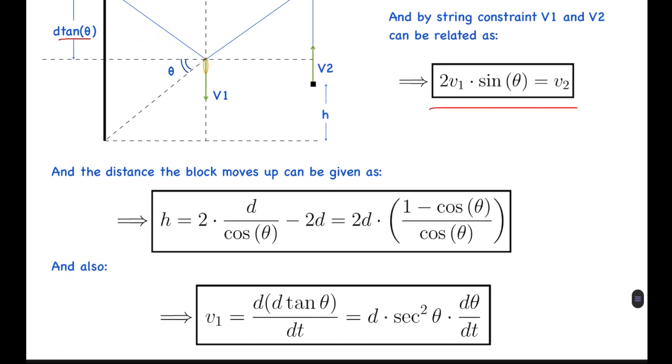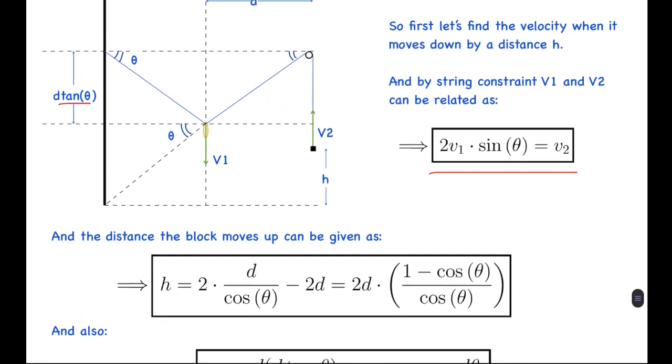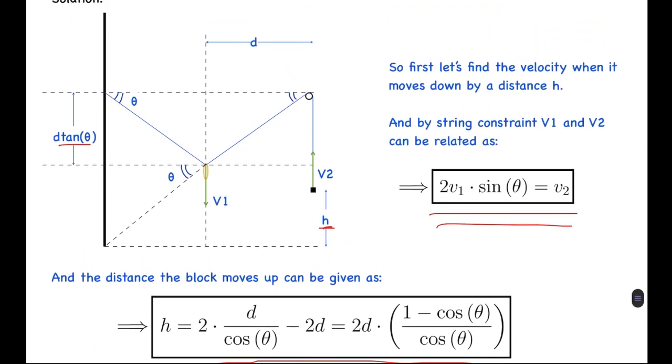seeing that v₁ equals d/dt of the height, which equals d tan θ. This comes out to be d sec² θ × dθ/dt. By conserving the length of the string, the height h gone up by the load can be calculated as 2 × d/cos θ - 2d. Differentiating this and relating it, we can get this relation again. You can overlook this very easily, so this is an important point to focus on.